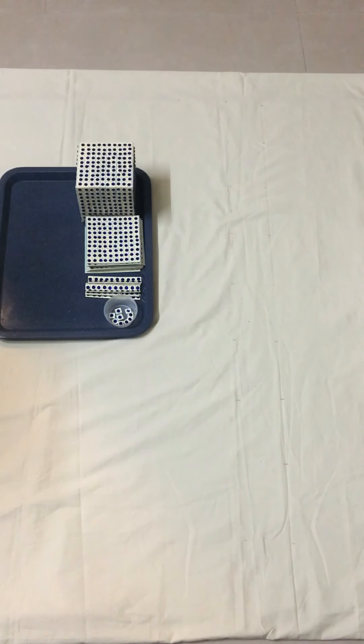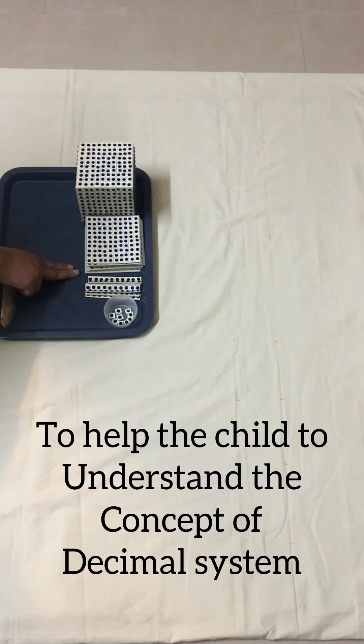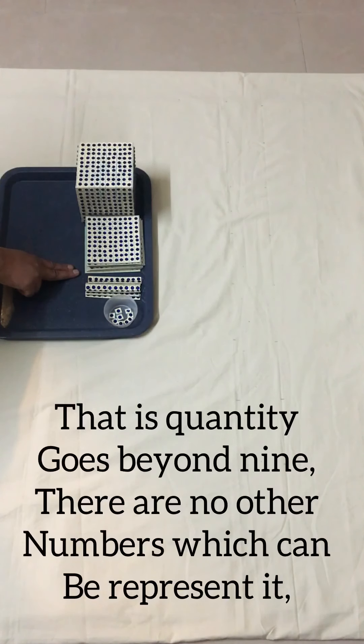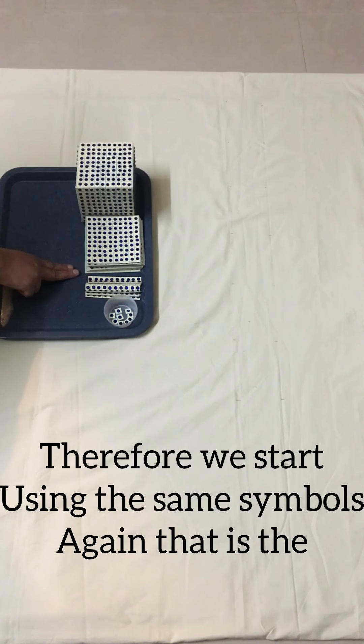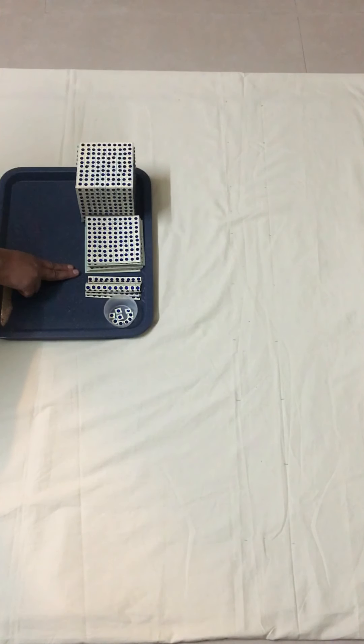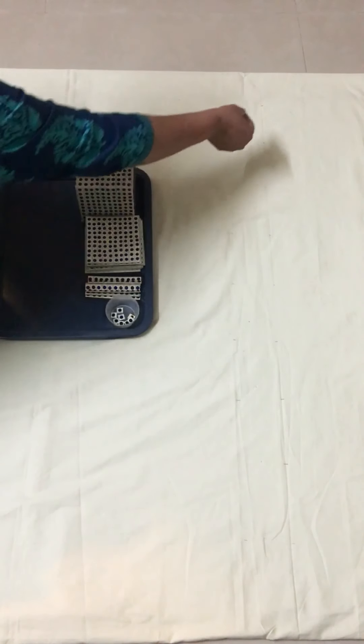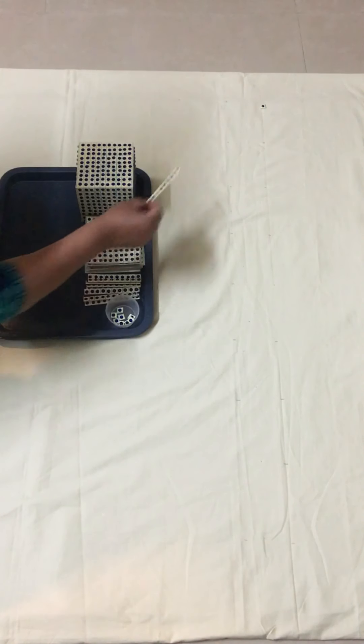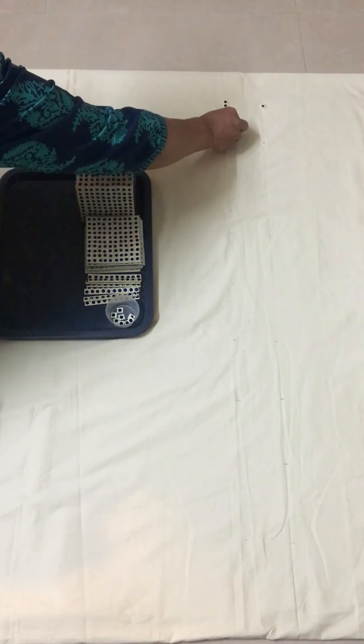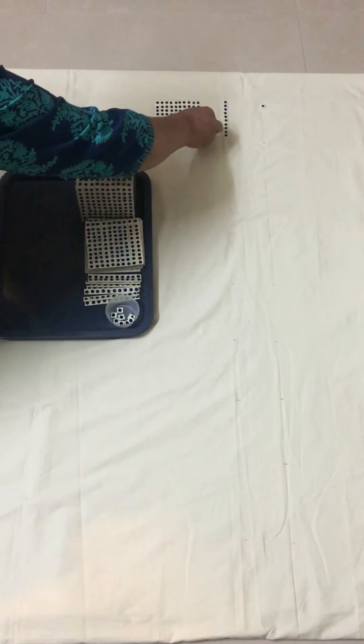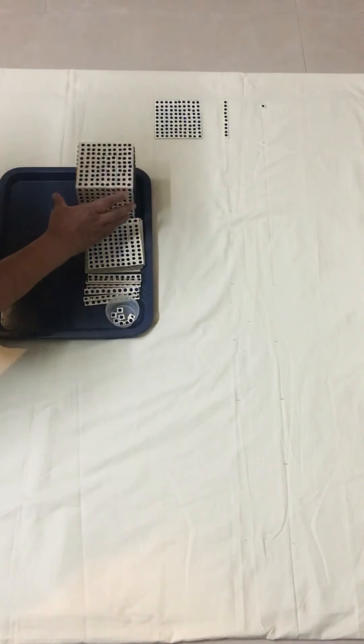Welcome to decimal system arrangement of bead material. First we help the child to arrange the numbers in succession: unit, 10, 100, and 1000.